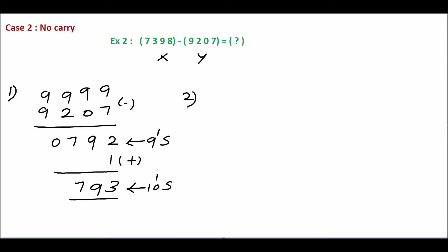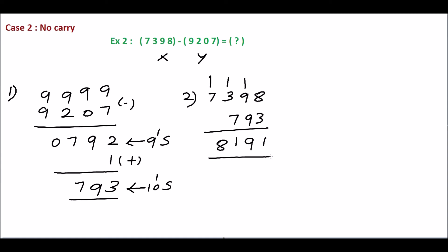In step 2, add x and the 10's complement of y, which is 0793. 8 plus 3 is 11, carry 1. 9 plus 1 is 10. 10 plus 9 is 19, carry 1. 1 plus 3 is 4. 4 plus 7 is 11, sum is 1, carry 1. 1 plus 7 is 8. This is the sum.